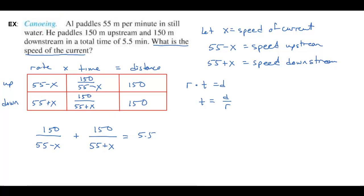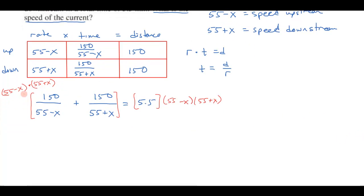We can forget about paddles and boats and rivers and streams and currents and just focus on the algebra. Let's multiply both sides by the common denominator. I'm going to multiply both sides by 55 minus x times 55 plus x.